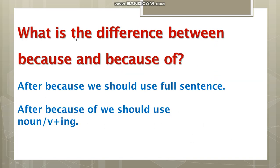What is the difference between 'because' and 'because of'? After 'because' we should use a full, complete sentence — subject, verb, and object. After 'because of' we should use a noun or verb plus -ing. Verb plus -ing means a gerund, which we have explained before.